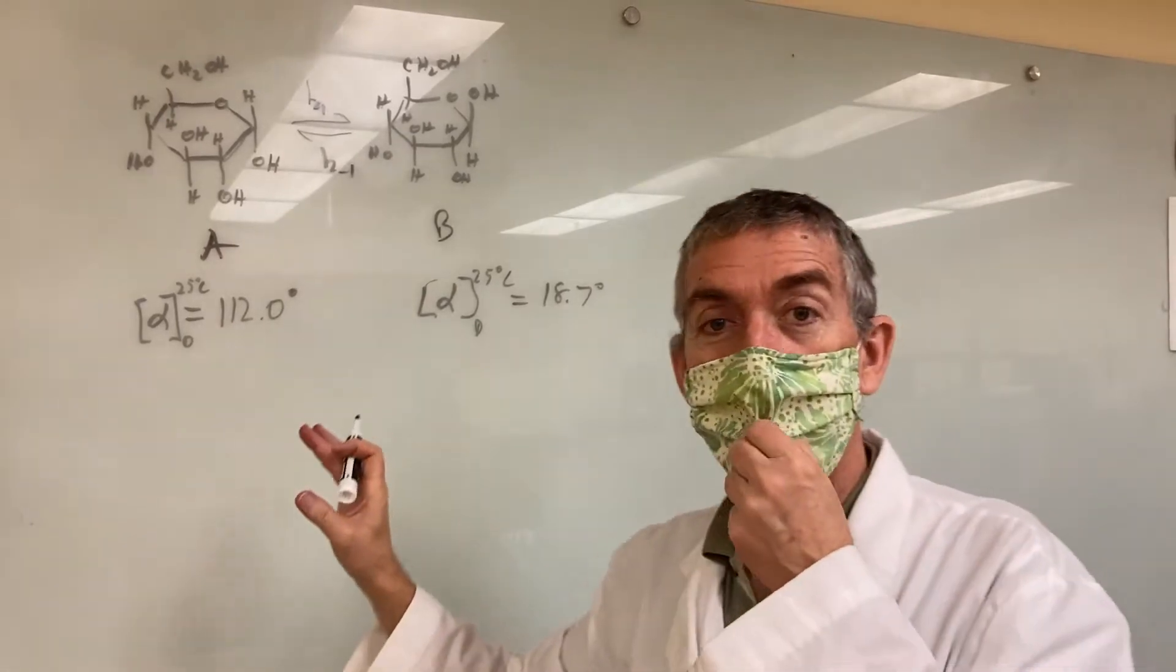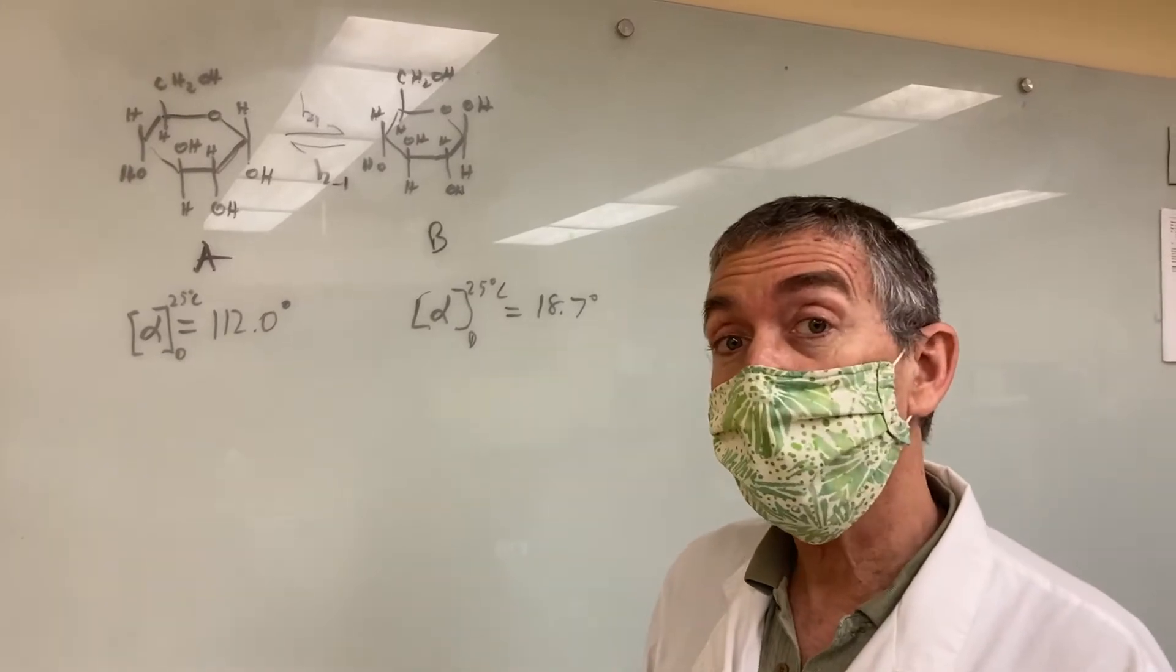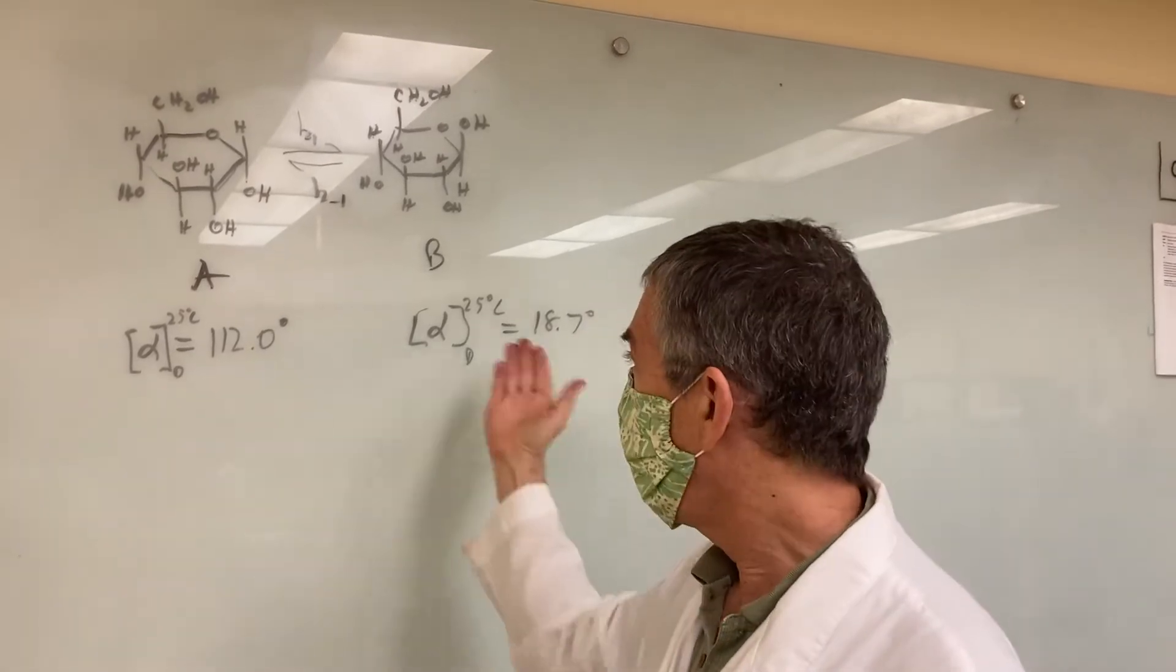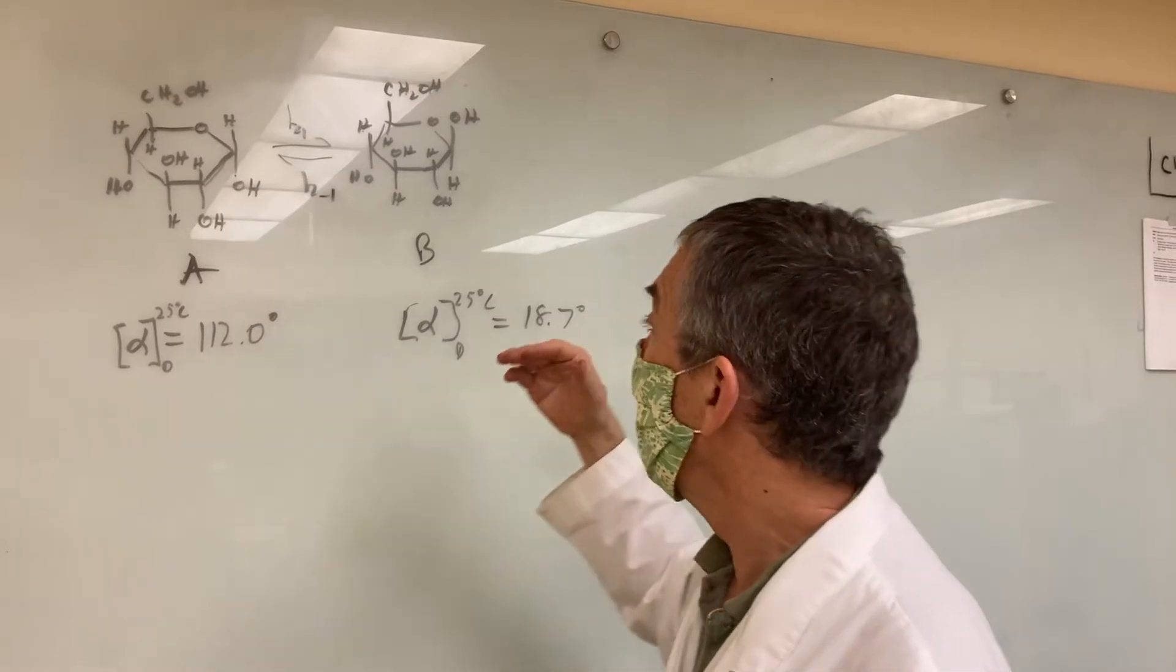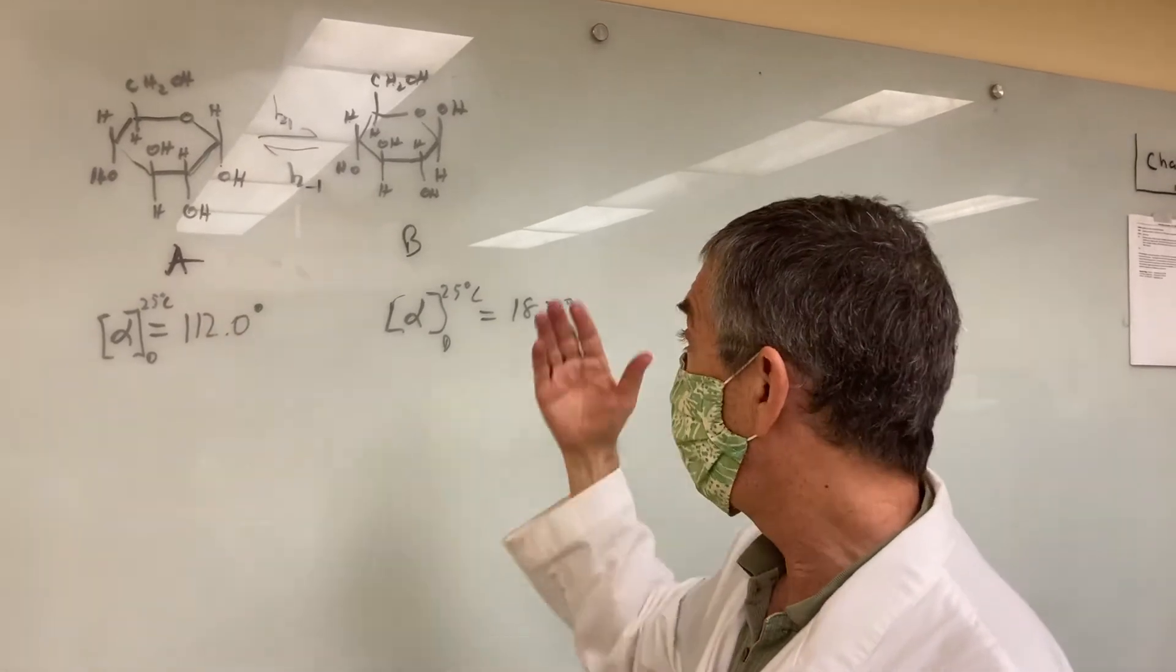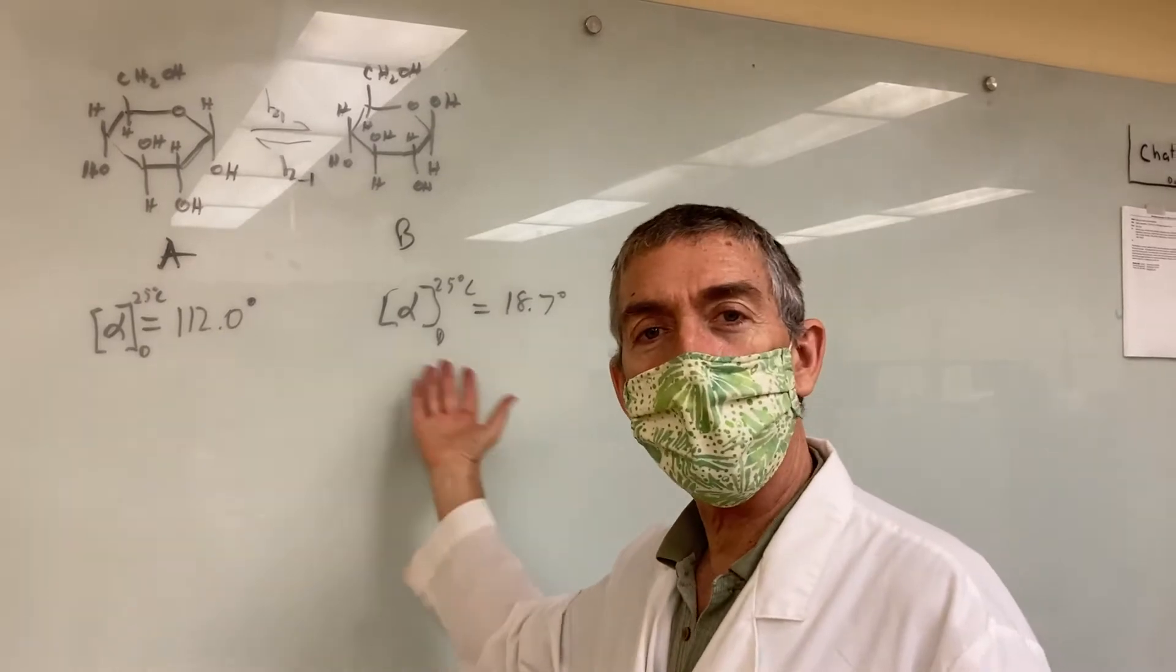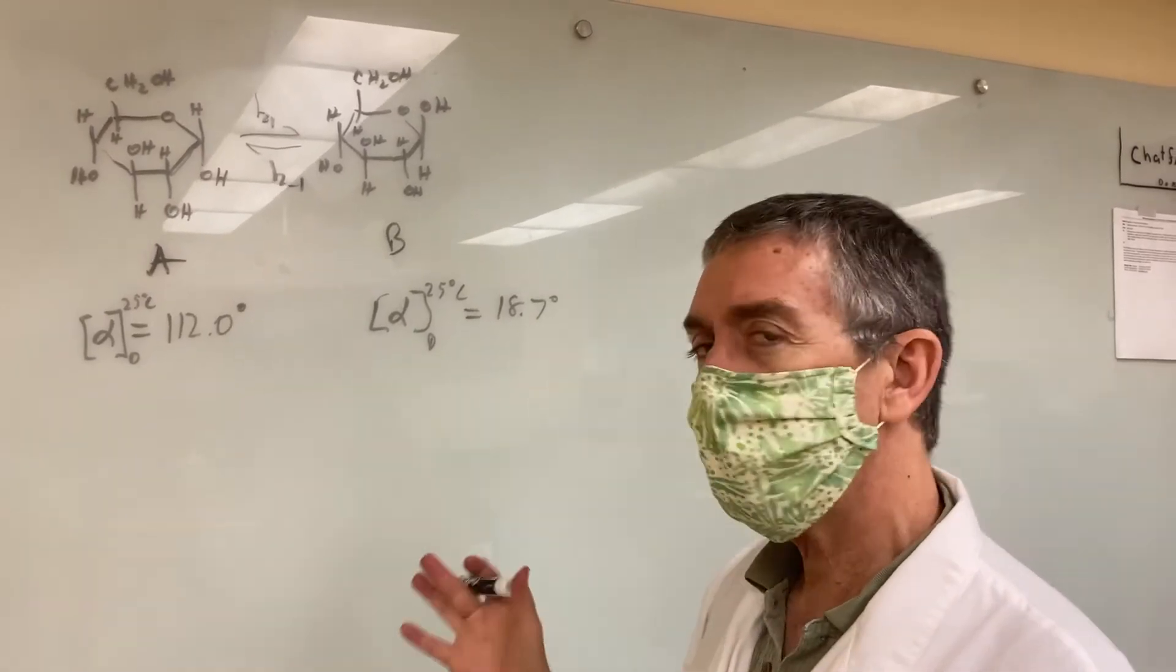So these are the specific rotations. They're independent of concentration. The amount of rotation you actually see will depend on several things. First, it will depend on the concentration you make, obviously. So your angles won't be quite this large because your concentrations will be smaller. And it will also depend on the ratio of A to B that you have. So if you had a 50-50 ratio, you'd have halfway between these angles for the specific rotation.